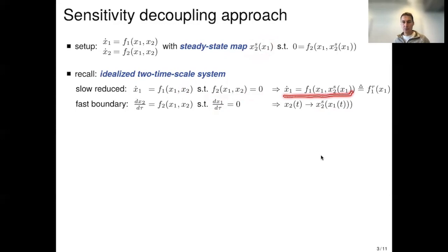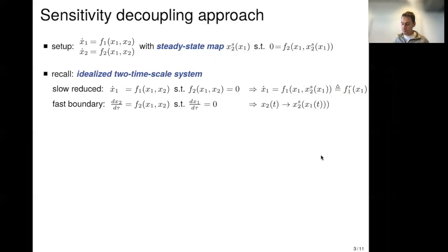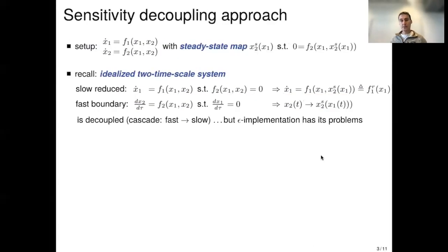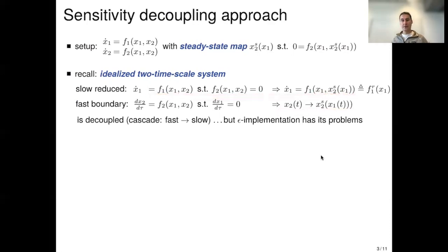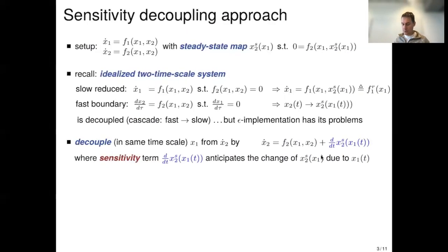This two-timescale idealized system is decoupled — it's a cascade system. The fast boundary layer relaxes quickly to the steady state x2s, and then the slow system evolves. But if you want to implement this with algorithms, you need nested iterations, which brings its own problems. So what do we do? We want to decouple these two dynamics but now on the same timescale.